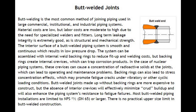Number 1: Butt Welded Joints. Butt welding is the most common method of joining piping used in large commercial, institutional, and industrial piping systems. Material costs are low, but labor costs are moderate to high due to the need for specialized welders and fitters. Long term leakage integrity is extremely good, as is structural and mechanical strength.